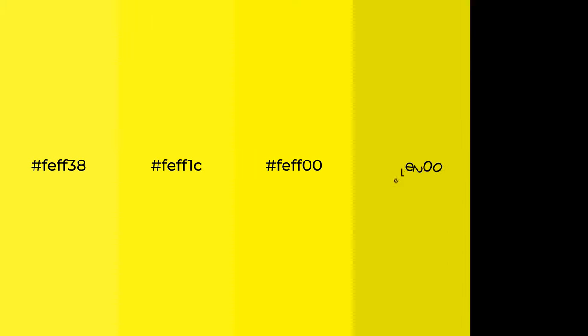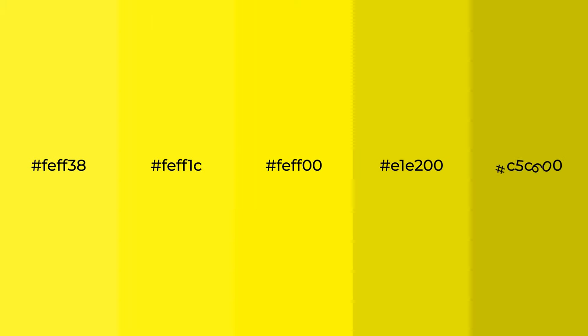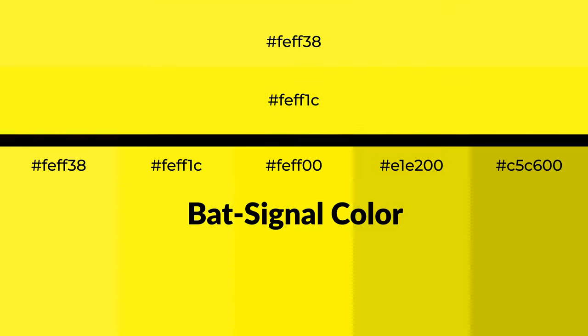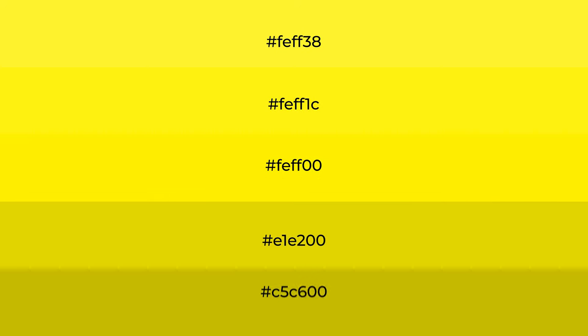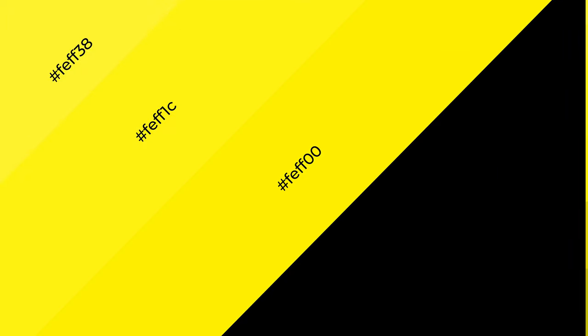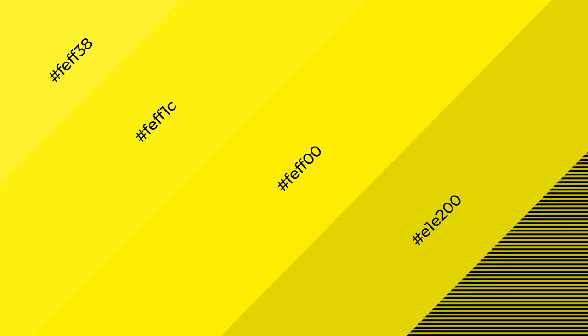Warm shades of bat signal color with yellow hue for your next project. To generate tints of a color, we add white to the color, and tints create light and exquisite emotions. To generate shades of a color, we add black to the color, and it is used in patterns, 3D effects, and layers. Shades create depth and drama.